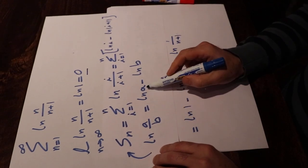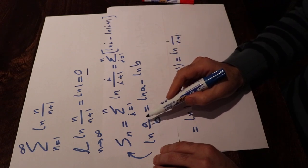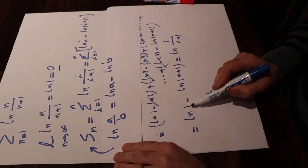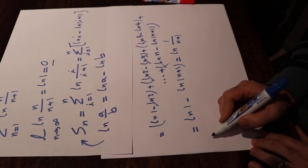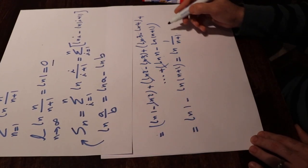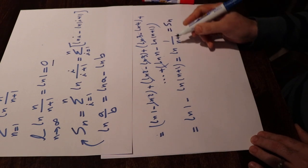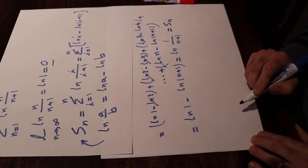So here a is 1, b is n plus 1. Therefore, that means Sn is equal to ln 1 divided by n plus 1.